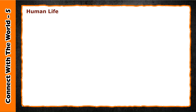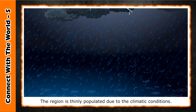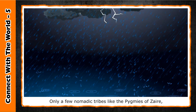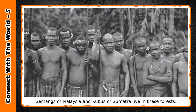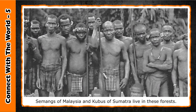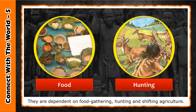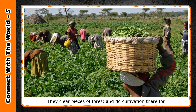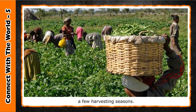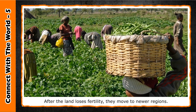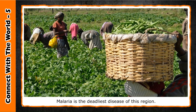Human life: The region is thinly populated due to the climatic conditions. Only a few nomadic tribes like the Pygmies of Zaire, Semang of Malaysia, and Kubus of Sumatra live in these forests. They are dependent on food gathering, hunting, and shifting agriculture. They clear pieces of forest for cultivation for a few harvesting seasons, and after the land loses fertility, they move to newer regions. Malaria is the deadliest disease of this region.